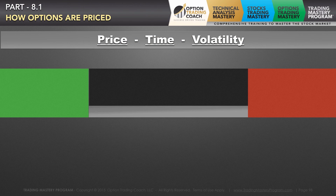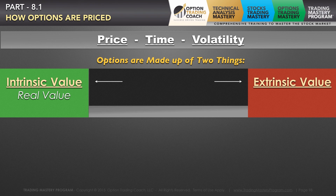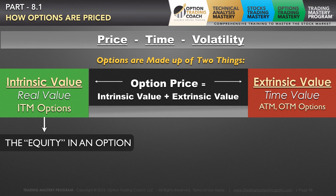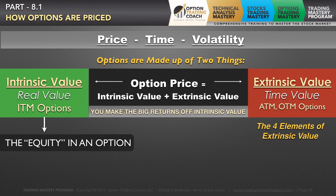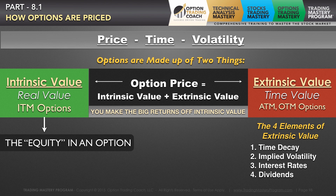There are three factors in the price of an option: the actual price of the underlying security, how much time is left until expiration, and the volatility metric. The intrinsic value is your real value — that's the equity of an option. Extrinsic value is your time value, and this is really prevalent in your at-the-money and out-of-the-money options. There are four elements that make up your extrinsic value: the first two are time decay and implied volatility, and then you also have interest rates and dividends.